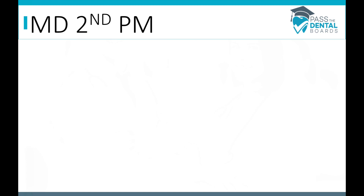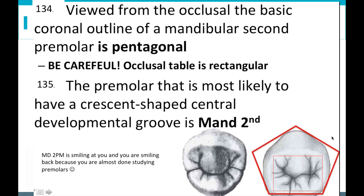Moving to the mandibular second premolar: viewed from the occlusal, the basic coronal outline is a pentagon, while the occlusal table is rectangular. The second premolar on the bottom is unique because there are different variations — a Y-type and a crescent type. The premolar most likely to have a crescent-shaped central developmental groove is the mandibular second premolar.